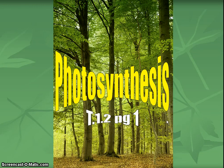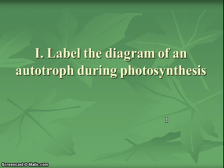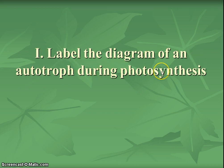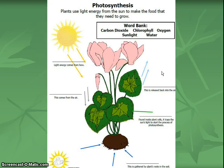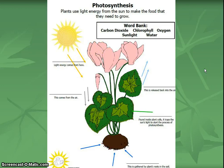Alright, let's get going. Our first header is going to be Roman numeral number one: Label the diagram of an autotroph during photosynthesis. If we're in class I'm going to give you this as a paste-in. If you're making this up at home or it's assigned for homework, I suggest you just draw a very simple flower and the Sun, and we're going to label things in our notebook rather than doing lots of bullets for this slide.